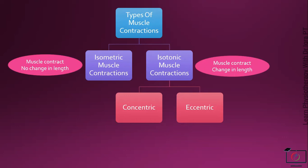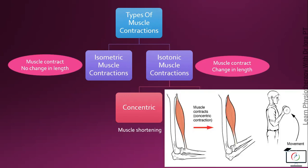Isotonic contractions are subdivided into concentric muscle contraction and eccentric muscle contractions. In concentric muscle contraction, the muscles shorten. As you can appreciate in this diagram, the person is flexing the forearm at the elbow joint and the length of the bicep muscle is decreasing.